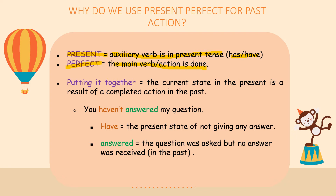Now when we put it together, Present and Perfect become Present Perfect. So it means that the current state in the present is a result of a completed action in the past — meaning that what is happening now is a result of something that happened in the past. Let's look at some examples so we can understand better.